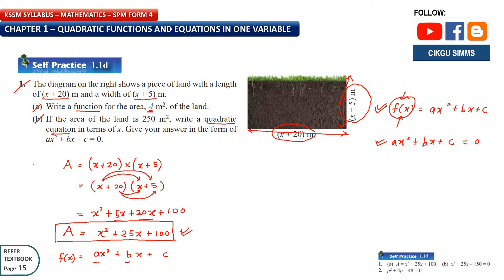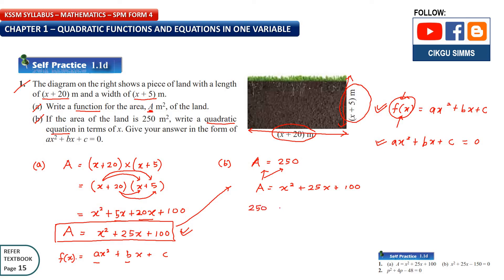For part B, the area of the land is given as 250 square meters. So we know the area equals 250. From the quadratic function, area = x² + 25x + 100, we substitute 250 in. We need to make it in the form ax² + bx + c = 0, so we bring everything to one side. The right side becomes 0, and positive 250 brought over becomes negative 250.